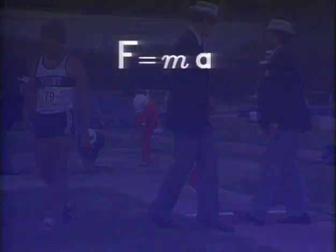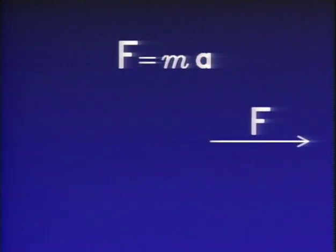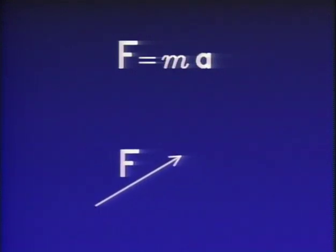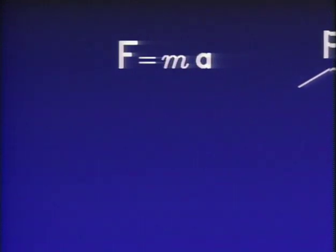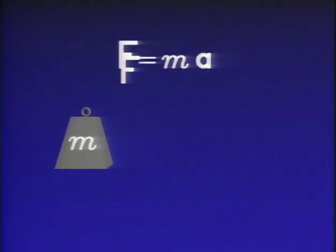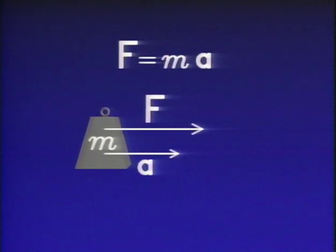First, F equals ma is a vector equation. Both force and acceleration are vectors — in other words, they have definite directions. In F equals ma, they must have the same direction.